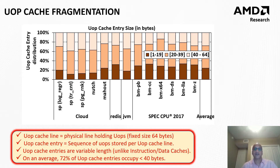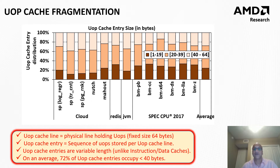However, our experiments showed that modern micro-operation caches are severely fragmented. The main reason for this fragmentation is that the UOP cache entries written to the micro-op cache are variable in length, unlike instruction and data caches. This variable length of micro-operation cache entries is due to various termination conditions imposed on these micro-operation cache entries. This figure shows that on average 72% of the UOP cache entries written to the micro-op cache are less than 40 bytes, with each UOP cache line being 64 bytes. The micro-op cache is thus significantly fragmented due to the variable length micro-op cache entries.